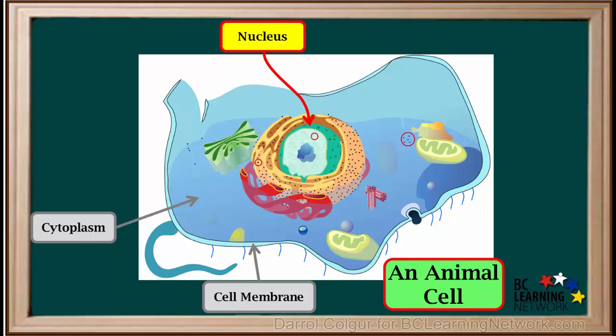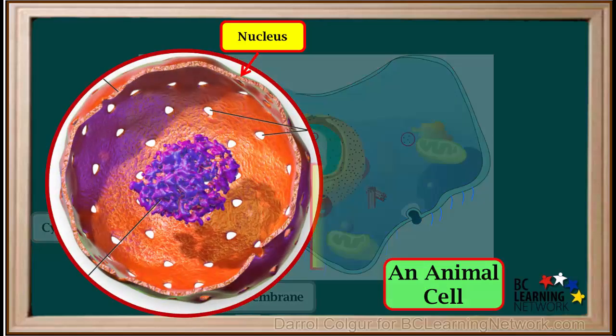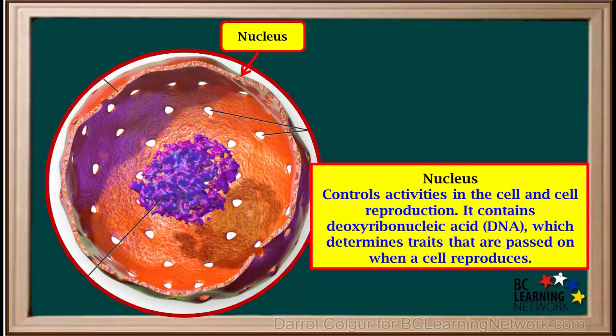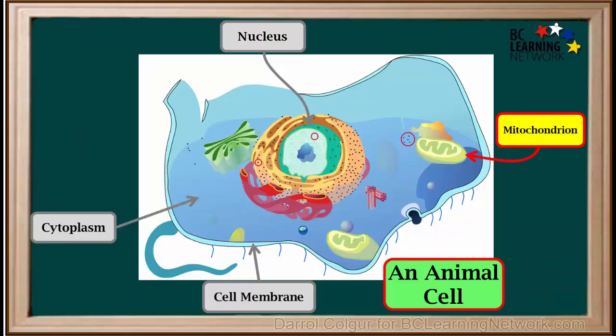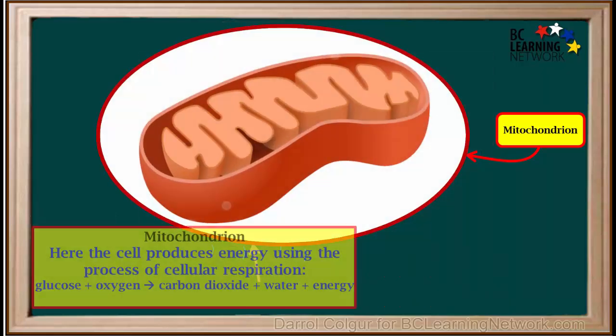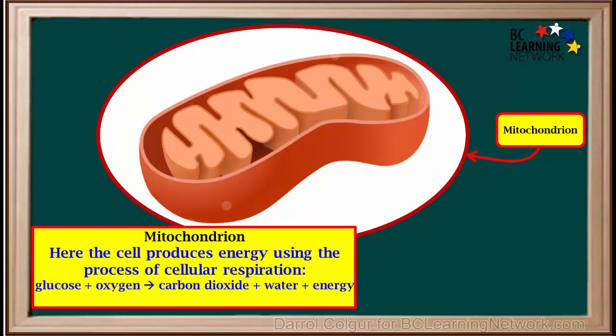The nucleus is a large structure inside the cell. It controls activities in the cell and reproduction of the cell. Its center contains deoxyribonucleic acid, or DNA, which determines traits that are passed on to new generations when a cell reproduces. A mitochondrion is an oval-shaped organelle — the plural is mitochondria. In this organelle, the cell produces energy using the process of cellular respiration, where glucose plus oxygen gives carbon dioxide, water, and energy.